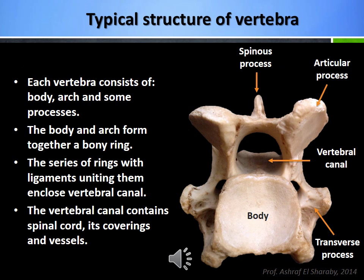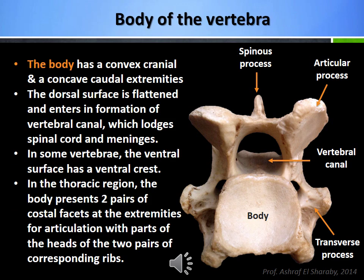Generally speaking, the vertebra has a typical structure. Each vertebra consists of a body, arch and some processes. The body and arch form together a bony ring. The series of rings with ligaments uniting them enclose the vertebral canal, which contains the spinal cord, its coverings and vessels. The body of the vertebra has a convex cranial and concave caudal extremities. The dorsal surface of the body is flattened and forms the floor of the vertebral ring.